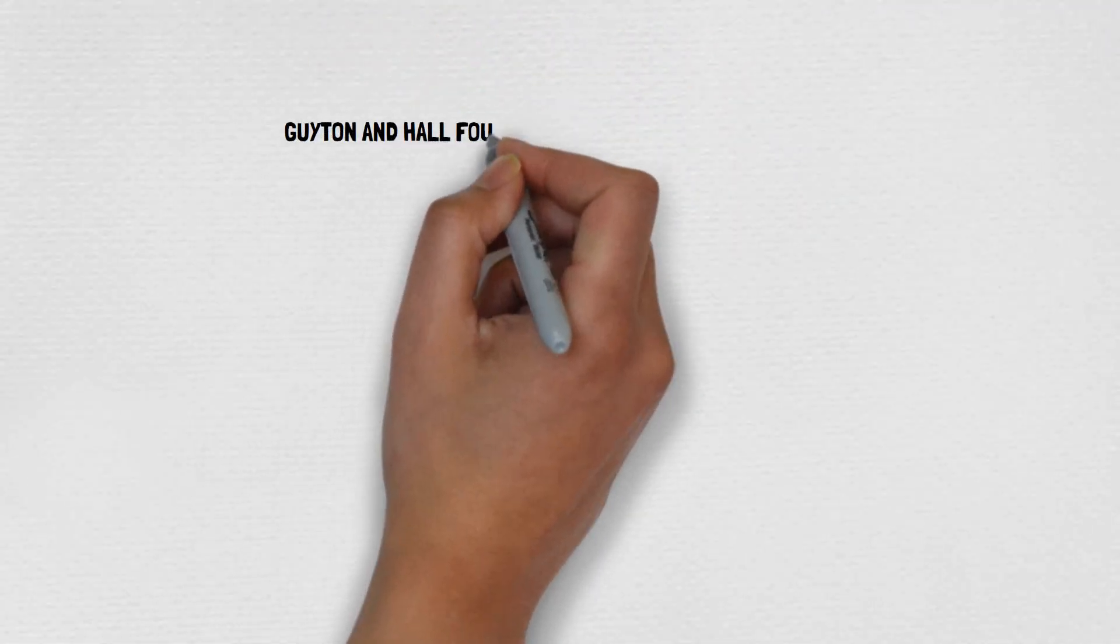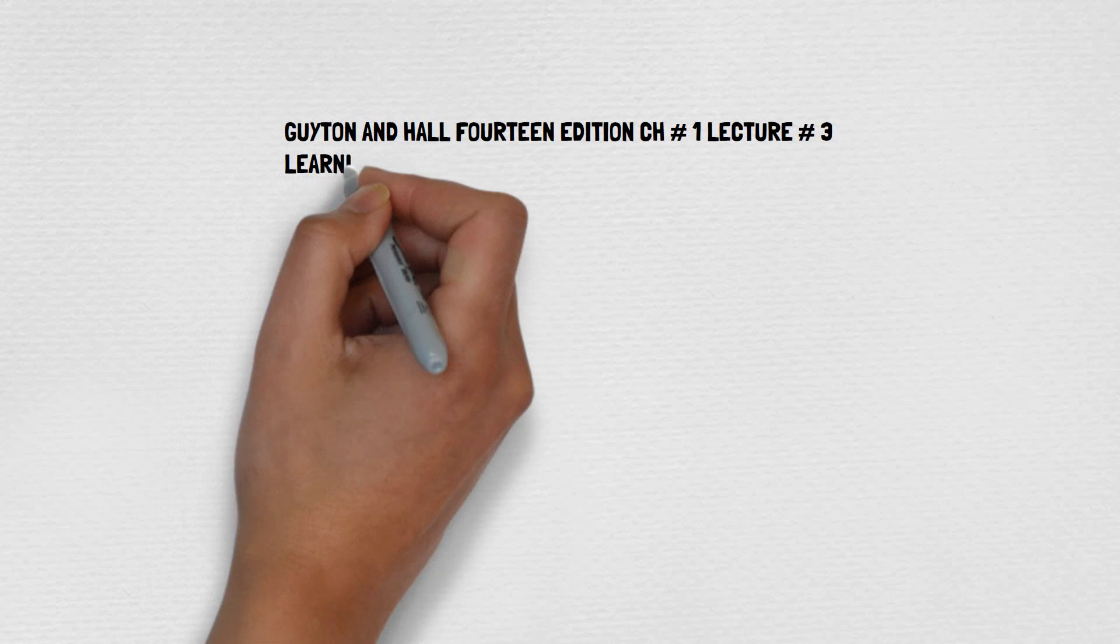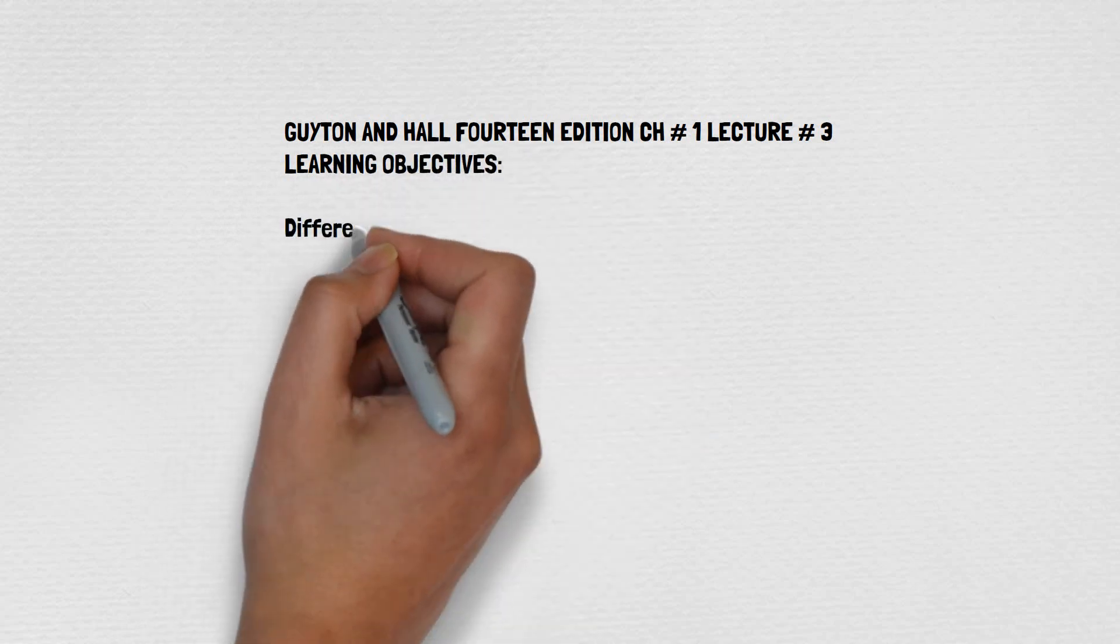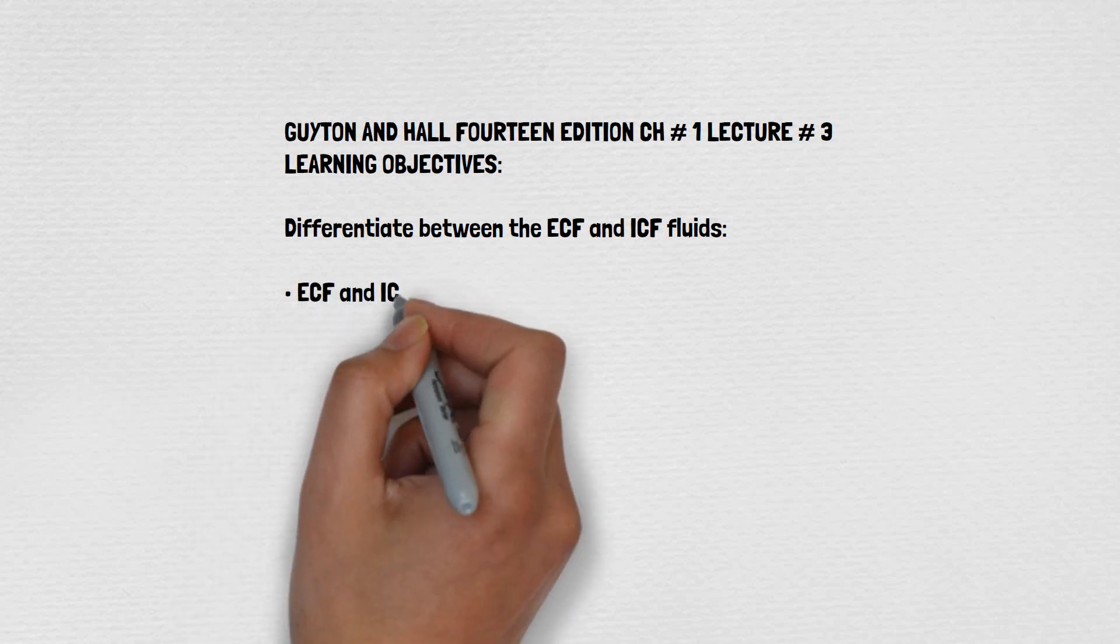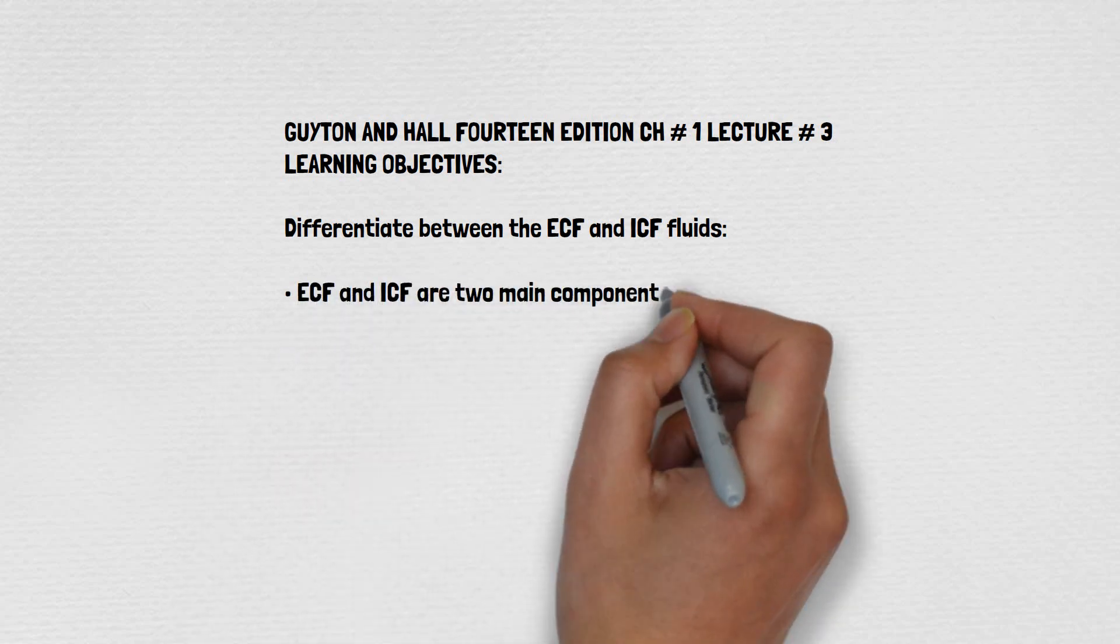Guyton and Hall 14th Edition, Chapter No. 1, Lecture No. 3. Learning Objectives: Differentiate Between the ECF and ICF Fluids. ECF and ICF are two main components of body fluids in humans.